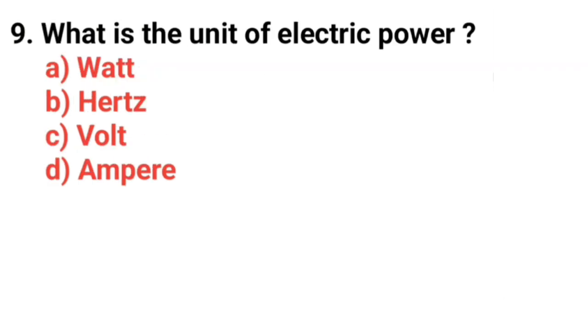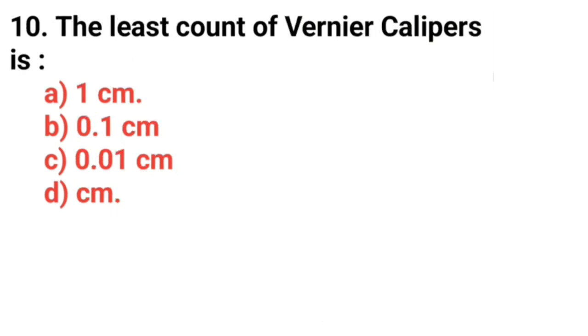Question number nine, what is the unit of electric power? Answer option A, watt. Question number 10, the least count of a vernier caliper is? Answer option B, 0.01 centimeter.